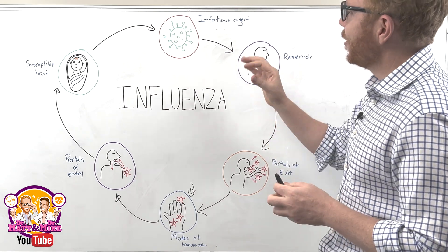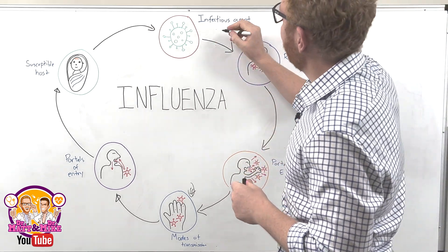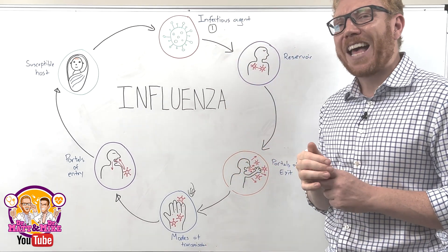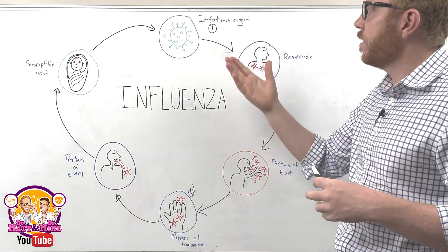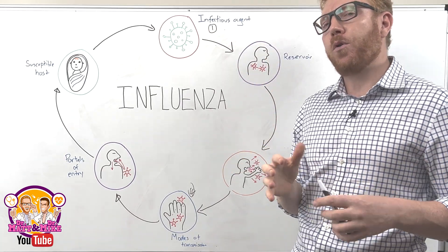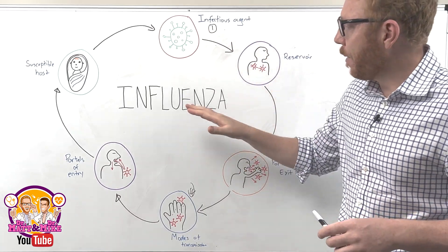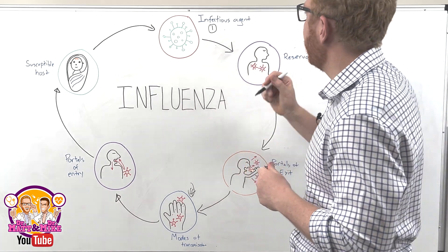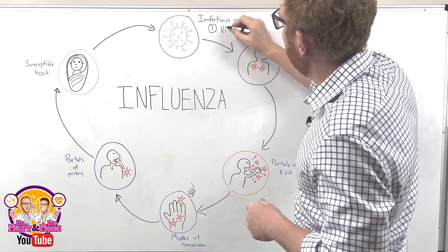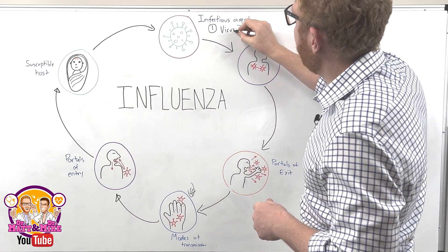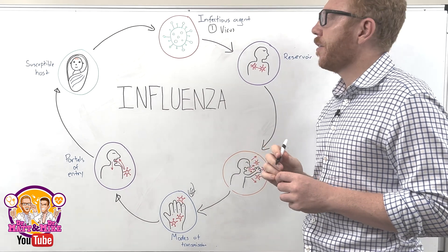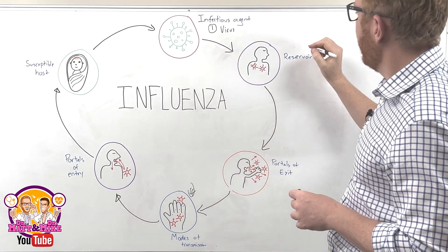Step one of the chain is the infectious agent itself. This could be essentially any microorganism, but for influenza today, it is a virus — the influenza virus. So that's step one.